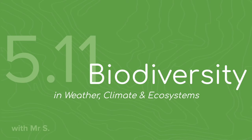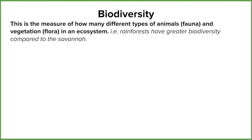We need to know what biodiversity is and why it's important. Biodiversity is a measure of the variety of plants and animals that live in an ecosystem. There'll be areas that are really rich in biodiversity, such as the rainforest, and even the savannah grasslands have a rich biodiversity, just not as much compared to the rainforest.